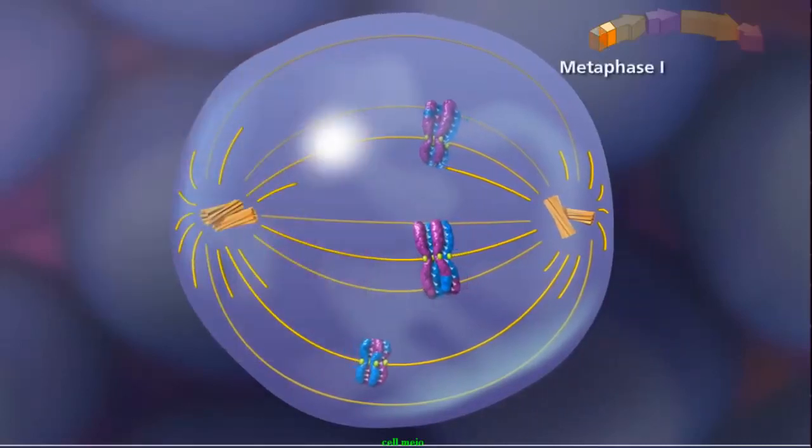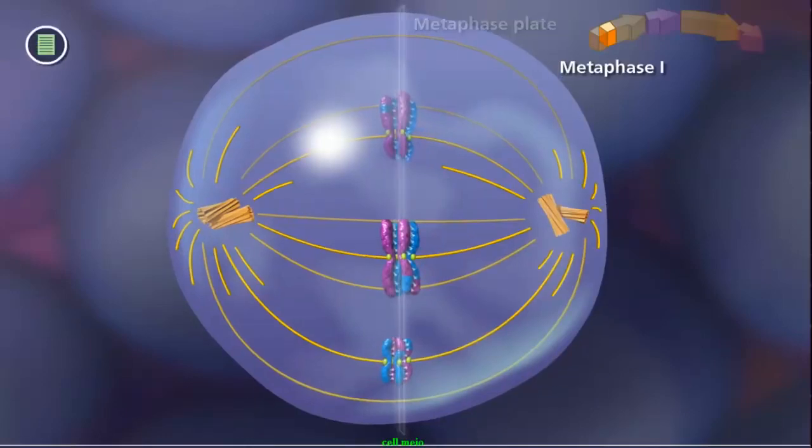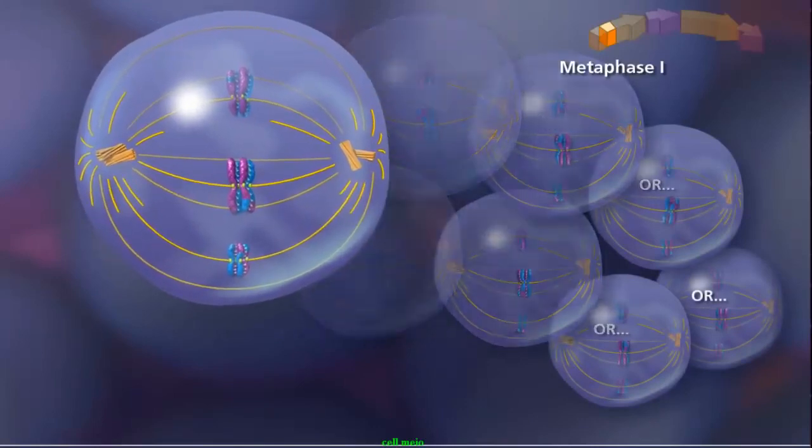During metaphase I, bivalents randomly align along the metaphase plate. Due to independent assortment, this alignment is random and adds to genetic diversity.